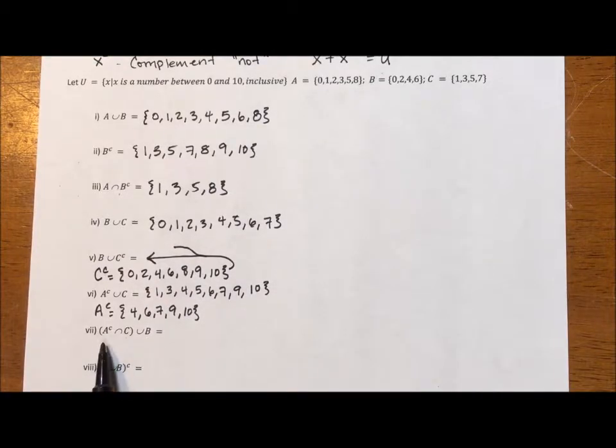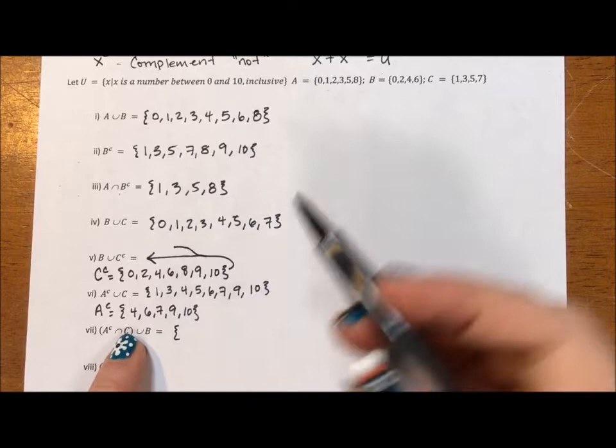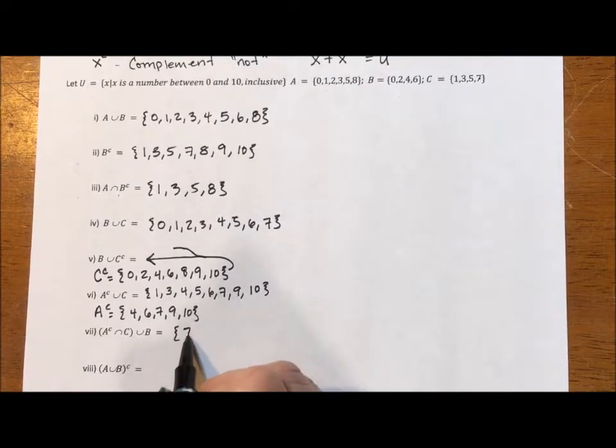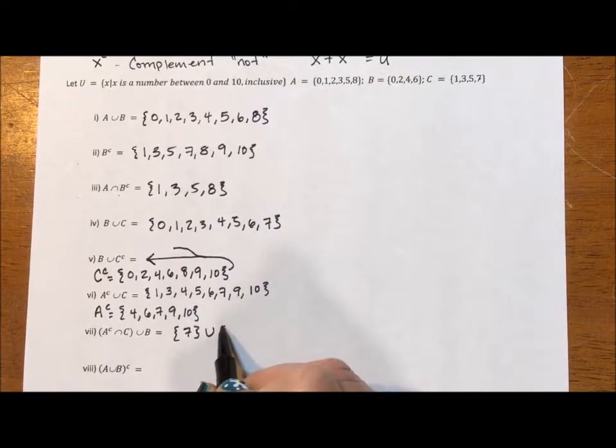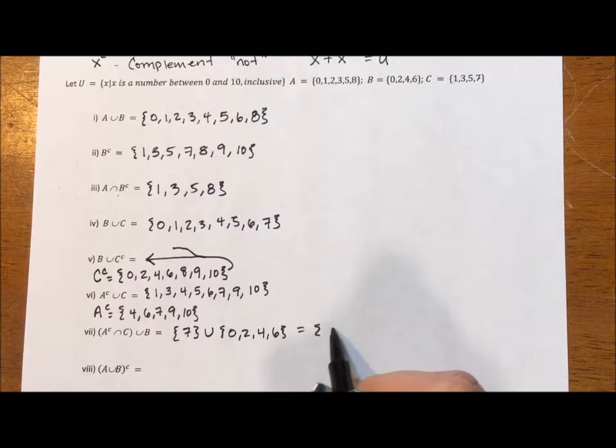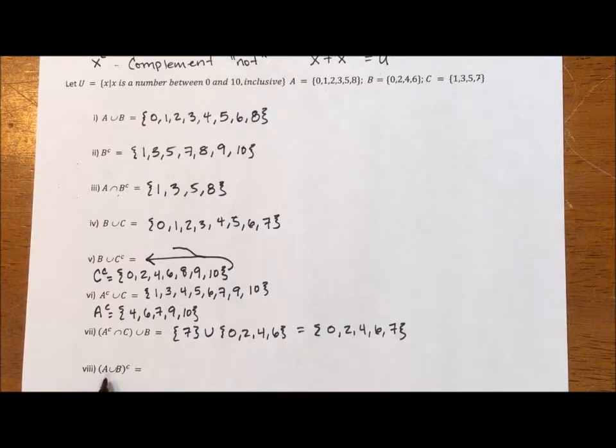Now things are getting interesting. We have three things going on. Always start with the parentheses. We have A complement right here. Intersection, once again, intersection means kind of like intersection of two streets, the part they share. The intersection of A complement and C, what they share. What do A complement and C? 4, 1, 3, 5, oh, 7. All they share is 7. And we want the union with that and 0, 2, 4, 6. Union means bringing everything together. So it's 0, 2, 4, 6, 7.